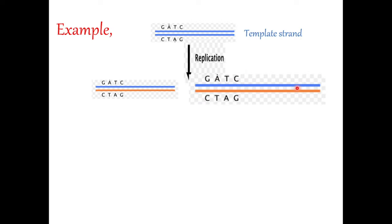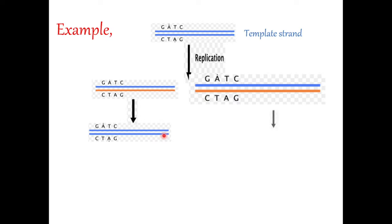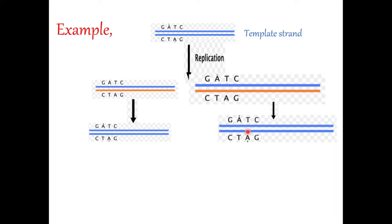On the other strand, a new strand will also be synthesized — G-A-T-C, with C attaching, T attaching, and so on. In such a way the replication process is carried out. Finally, one strand forms here and another strand forms there. This is semi-conservative replication — not conservative, not dispersive.